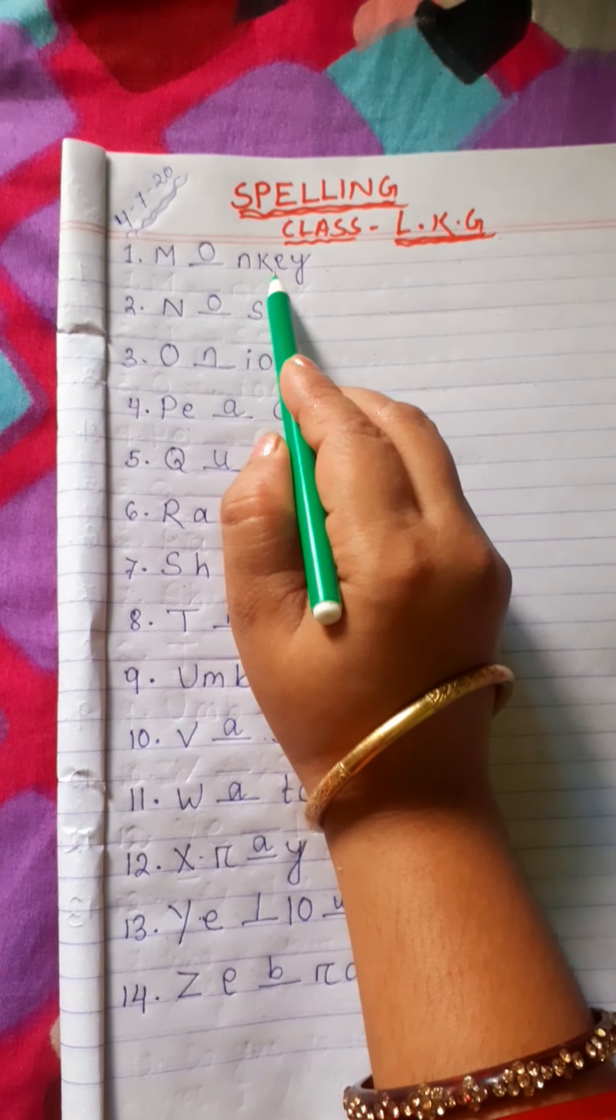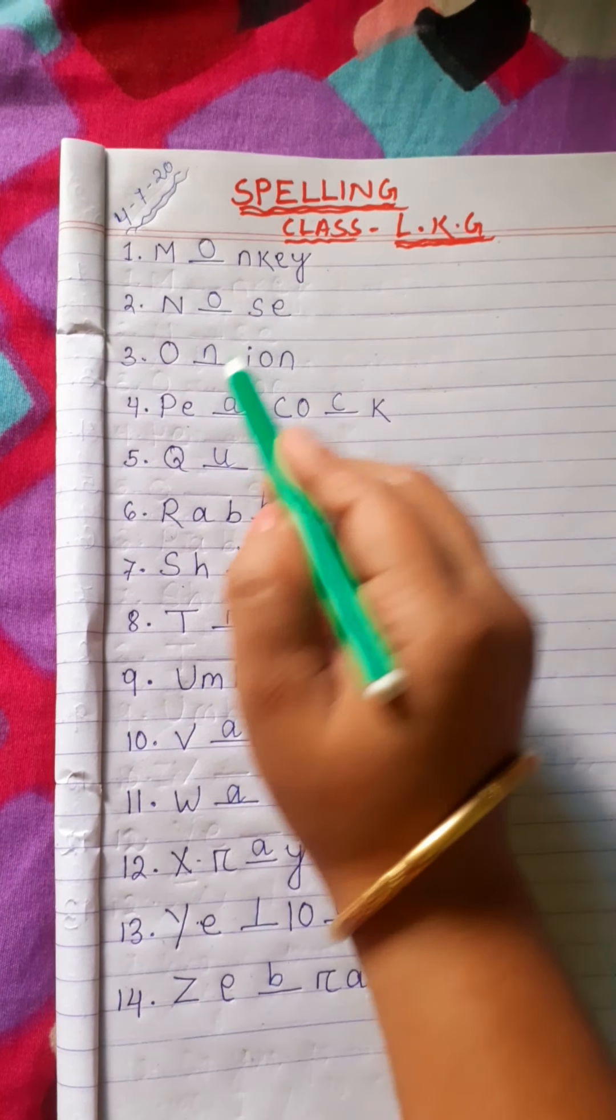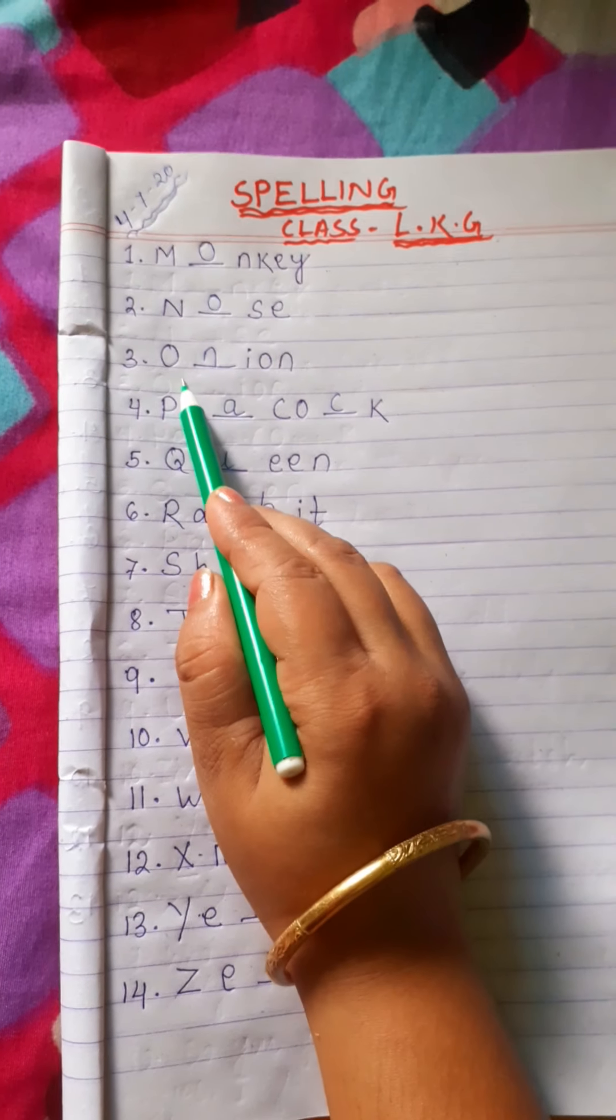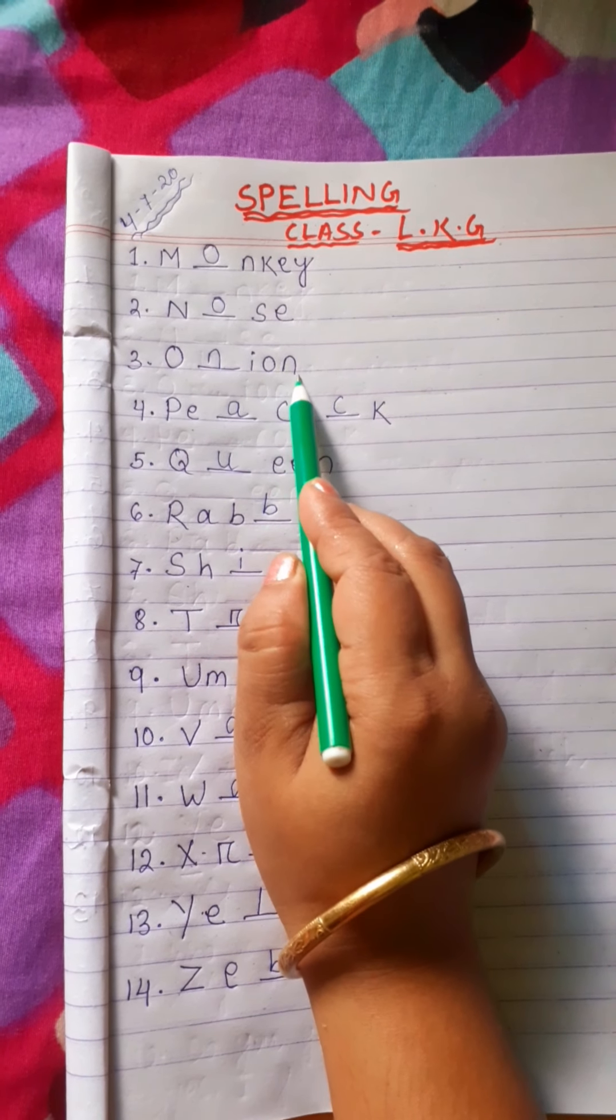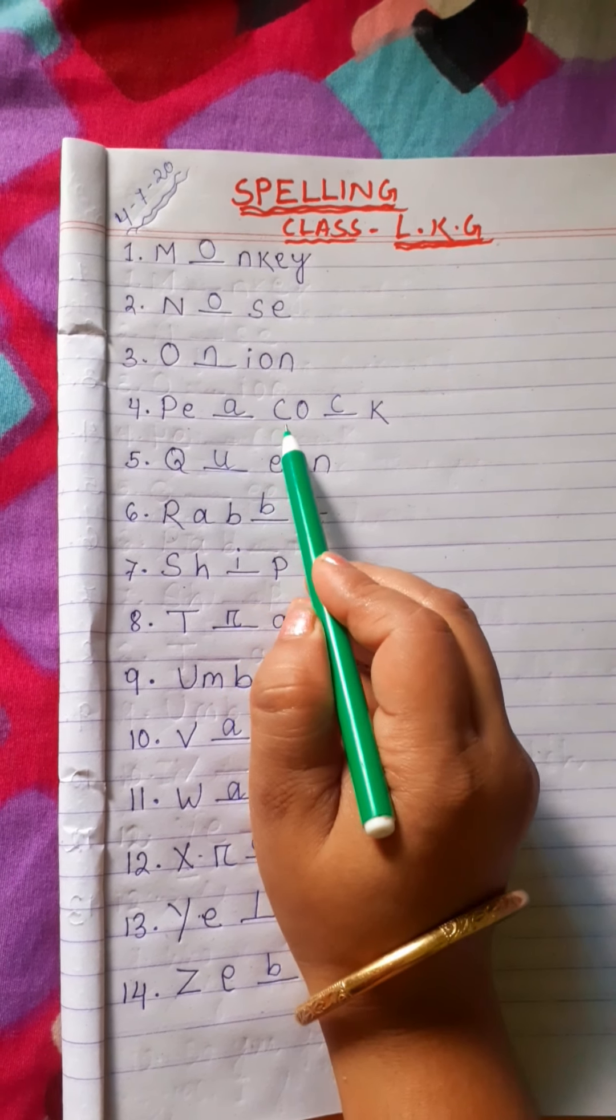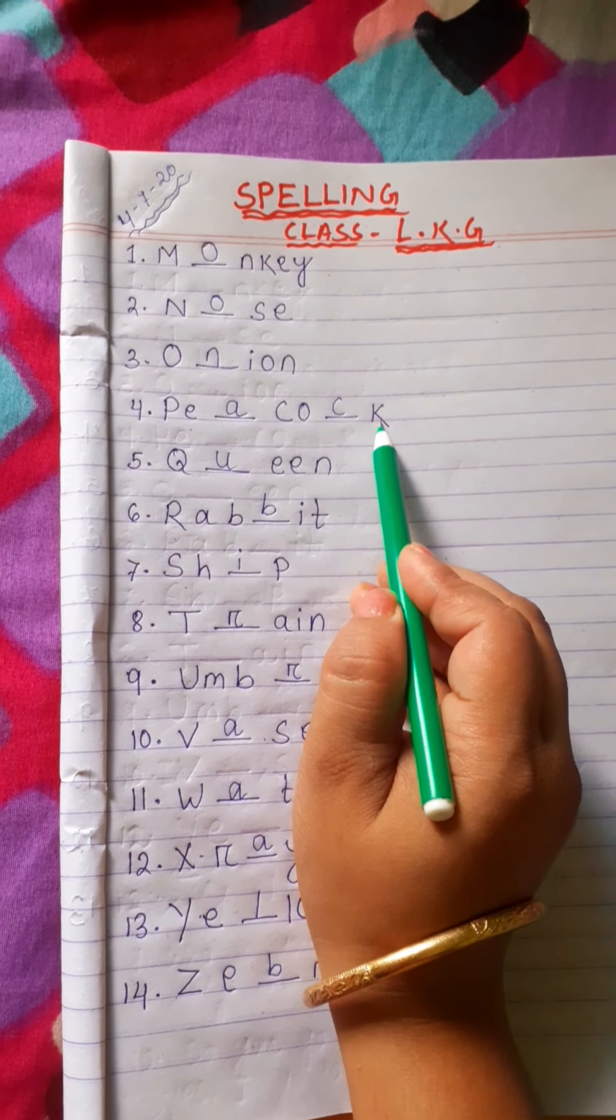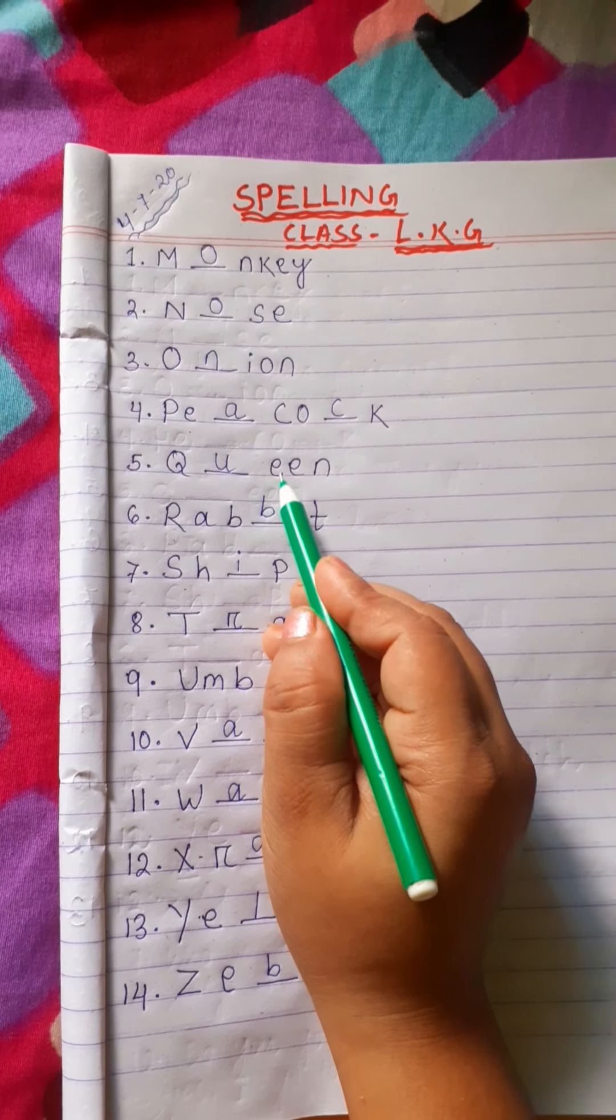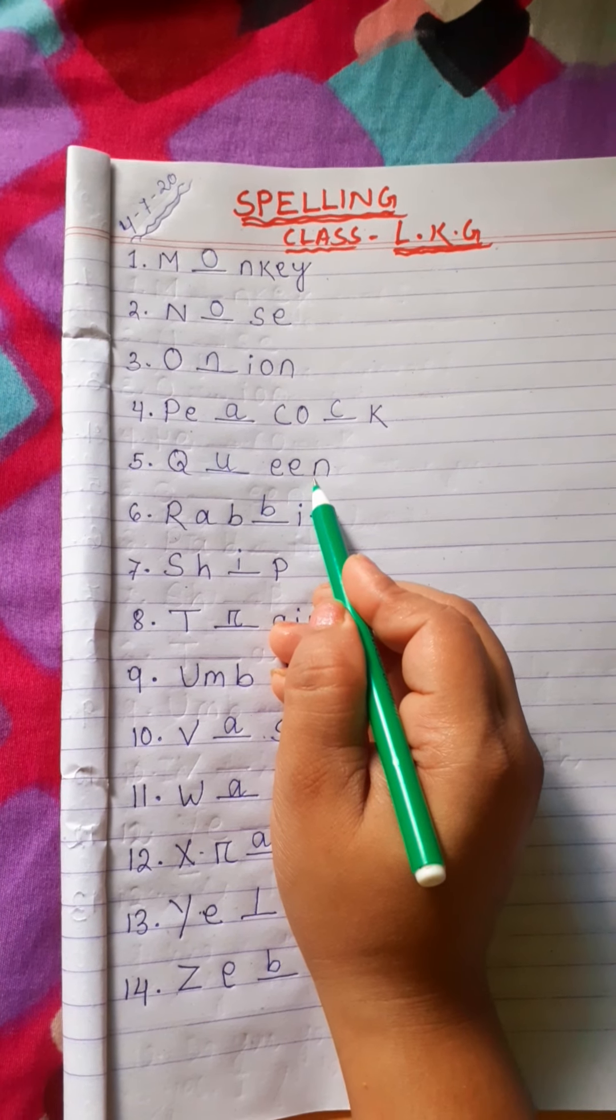M, O, N, K, E, Y, Monkey. N, O, S, E, Nose. O, N, I, O, N, Onion. P, E, A, C, O, C, K, Peacock. Q, U, E, E, N, Queen.